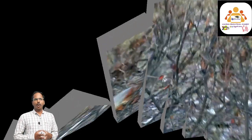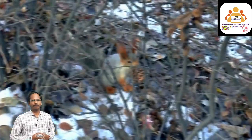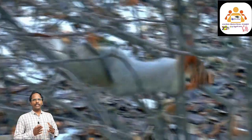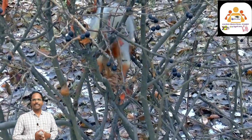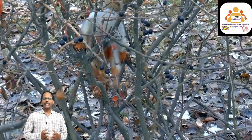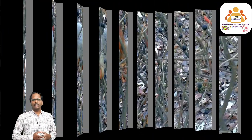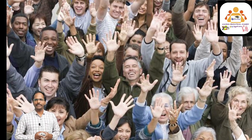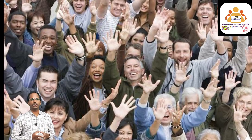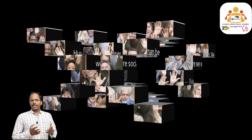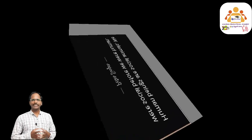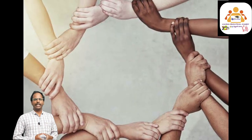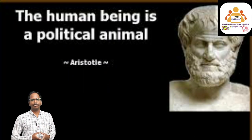Children, what is meant by lifestyle? The way in which a person or group lives is known as lifestyle. Let us go to the topic. Human beings live in families, therefore they are called social animals. For our various needs, we are dependent on each other. We gather food to eat, clothes to wear, houses to live in and vehicles to travel.